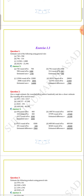Question D: 4,089,348 rounds off to 4,089,300 because by rounding to the nearest hundred, 348 becomes 300. Then 48,365 rounds off to 48,400. The estimated difference is 4,40,900.